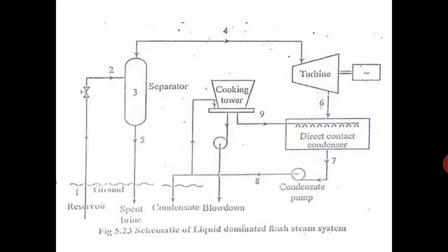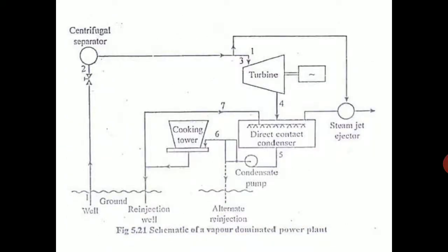If it is a vapor dominated plant, vapor means we are getting from the earth's crust directly steam. When you inject water, you are directly getting steam. The steam is coming from the well.